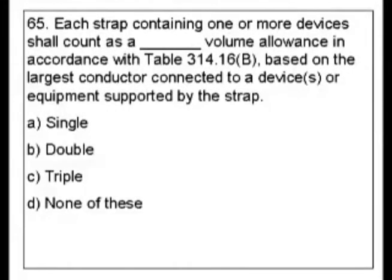Question 65. Each strap containing one or more devices shall count as a blank volume allowance in accordance with table 314.16B, based on the largest conductor connected to a device or equipment supported by the strap. Is it A single, B double, C triple, or D none of these?